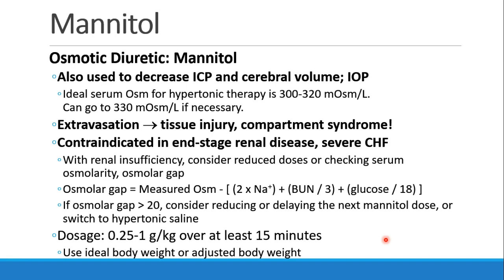Normal serum osmolarity, as we know, is a little bit below 300. With mannitol, we can get osmolarity up into the 300 to 320 range, even up to 330 if necessary. This will increase plasma osmolarity and pull free water out of cells, especially brain cells, in order to relieve intracranial pressure. Now when you use mannitol, you need to be careful to put it into a good, reliable peripheral IV — if not a central line — because if it extravasates and goes into the tissue, it can cause a very significant tissue injury as it pulls water into that interstitial space. Patients can even develop a compartment syndrome and require fasciotomy.